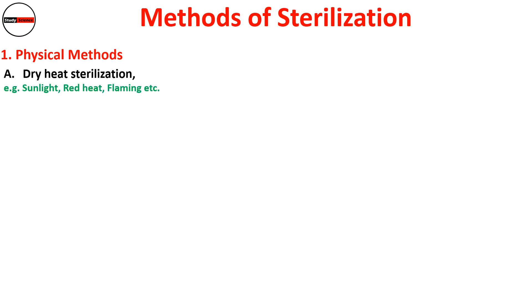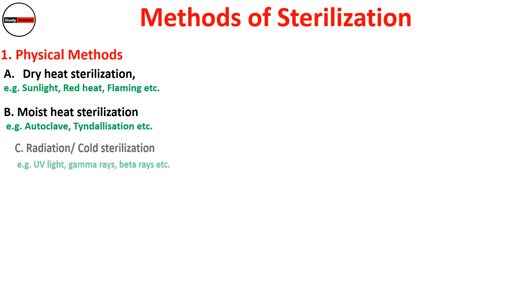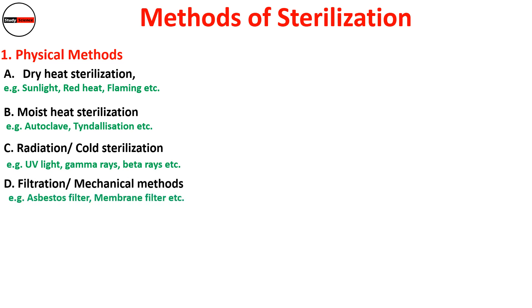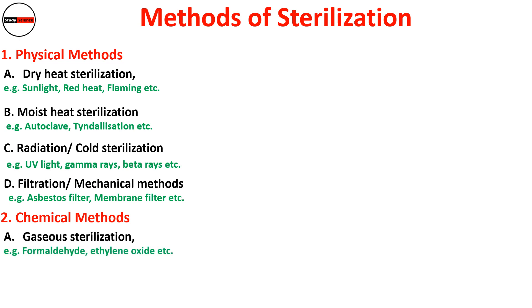By using different methods we achieve sterilization and make objects free from microorganisms. The first category is physical methods, which include dry heat sterilization, moist heat sterilization, radiation (also called cold sterilization), and filtration (also called mechanical methods). The second category is chemical methods, including gaseous sterilization and sterilization using disinfectants.